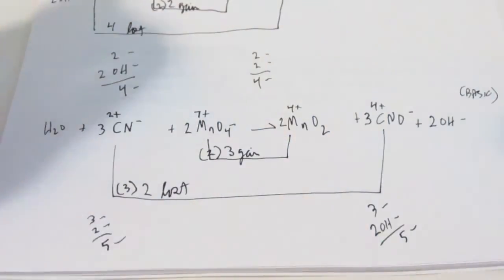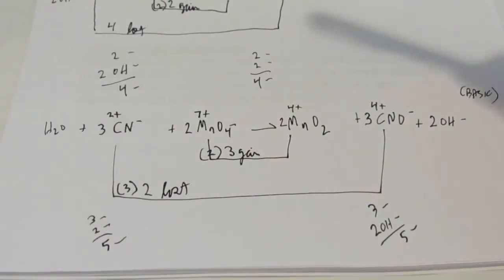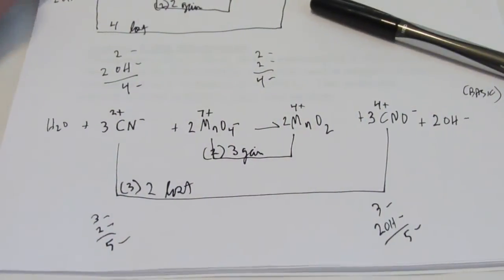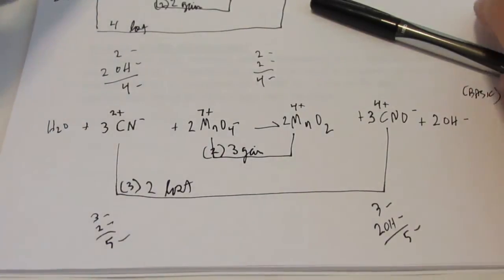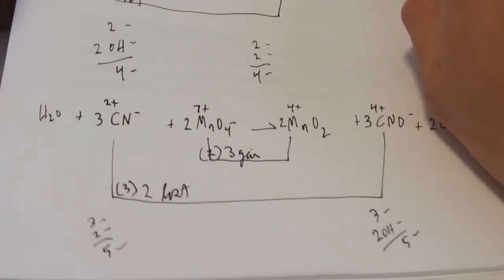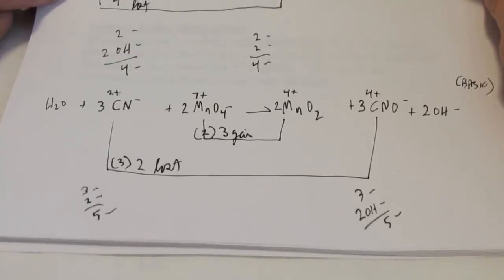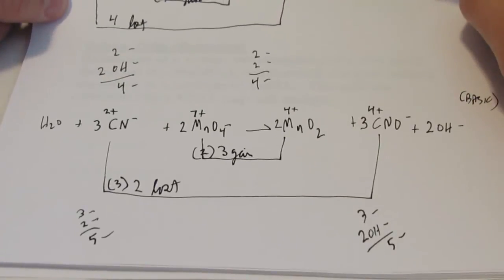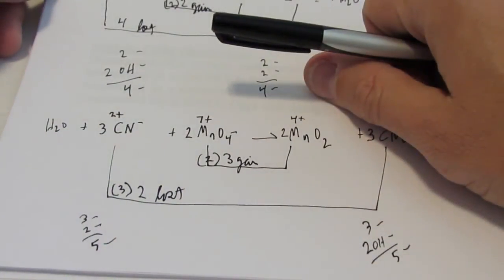So that's how you balance redox reactions. We've done six for you — they're all pretty much the same. Just follow those simple steps and you should be able to balance any and all redox reactions. Have fun with it — it actually is kind of fun.